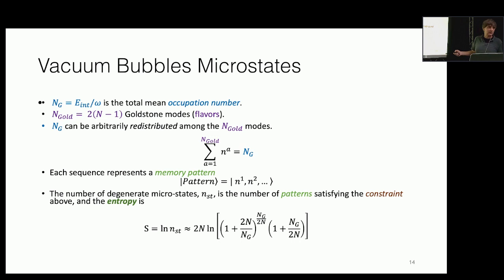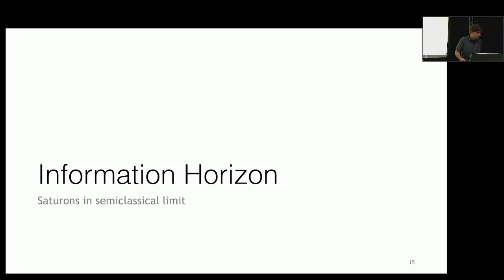You can evaluate the bubble microstate entropy — it's completely straightforward. Not surprisingly, it's maximal at the maximum and it scales like N. When the bubble saturates unitarity you get this bound, and now it has other properties of a black hole — for example, an information horizon.